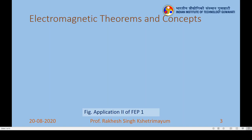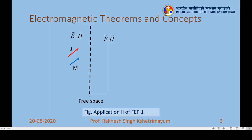Here we will apply field equivalence principle 1 to simplify another electromagnetic problem. We consider magnetic current density M and electric current density J existing somewhere in free space. If J and M are time-varying, they will start radiating fields everywhere in free space. We assume an imaginary boundary surface which divides free space into left half space and right half space. We are interested in finding fields only in the right half space due to sources J and M in the left half space.